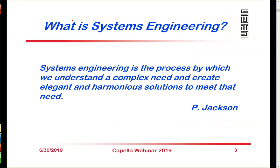In my definition of systems engineering, it's the process by which we understand a complex need, and then I put two targets for us: one, we want an elegant solution, and two, a harmonious solution. That gets at the concept that when you put a new system into place, you want it to interface with existing systems as well as possible. Both elegance and harmony become the touch points for a systems engineer — I quite like that definition rather than implying we're trying to create complex systems.